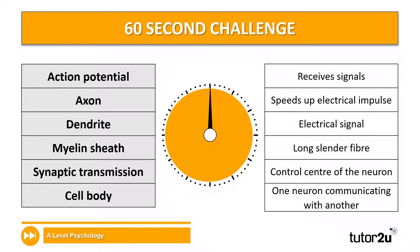I'm going to start you off with a 60 second challenge. This is going to be question 12 in your worksheet. All you have to do is match the key terms on the left — action potential, axon, dendrite etc. — to their correct definitions on the right. So you're going to have one minute to fill this in.